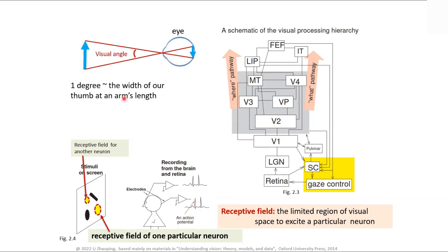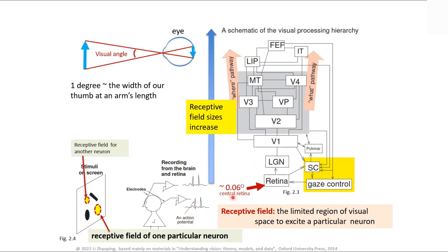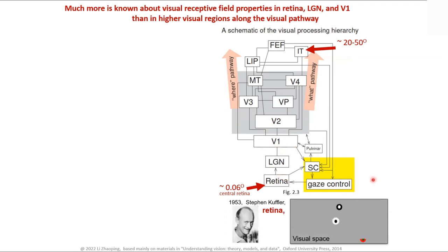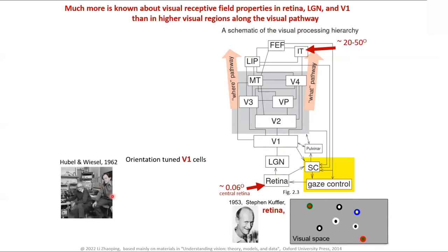One degree is like a thumb in front of you when your arm is stretched out. The receptive field size really increases from V1 bottom to top — 0.06 degrees for the smallest, very tiny, while at the top it's really big, maybe 20 to 50 degrees. Each neuron covers a huge receptive field. Unfortunately, after all these decades most knowledge is only about the retina and V1, and we're almost ignorant beyond V1 relative to how knowledgeable we are about retina and V1.